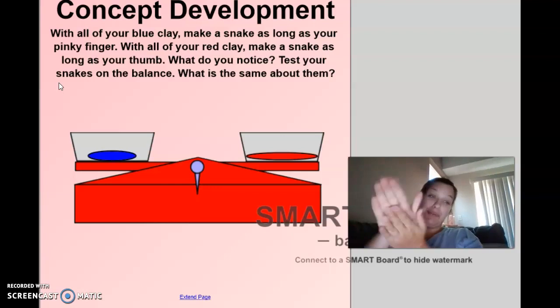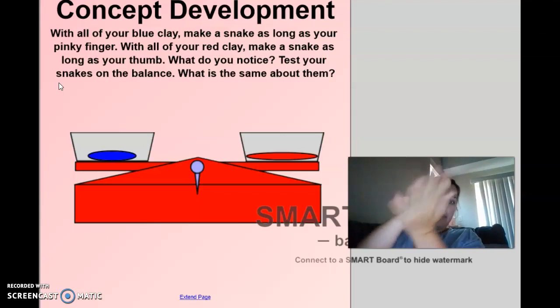Now I rolled up that blue clay and I made it into a snake. Can you roll it for me? Help me. As long as my pinky finger. Can you roll it for me? Perfect. And then I took the red clay and I rolled it into a snake as long as my thumb. So look at my pinky finger and my thumb. Which is longer? My pinky finger? Hold on, I'm trying to get it so you can see my thumb. My pinky finger or my thumb. Which is longer? My pinky finger.